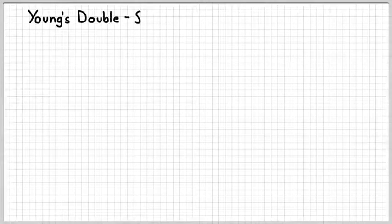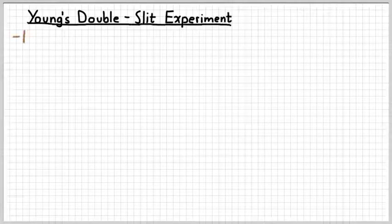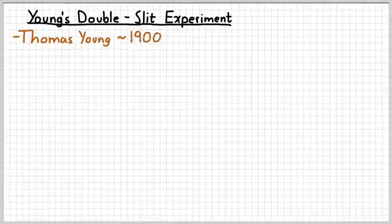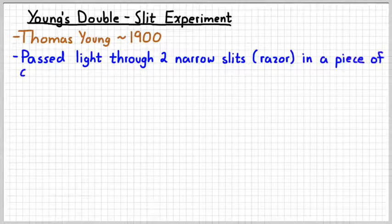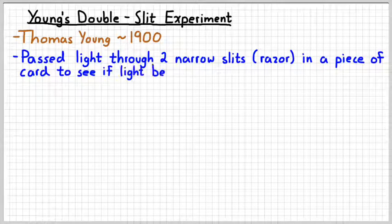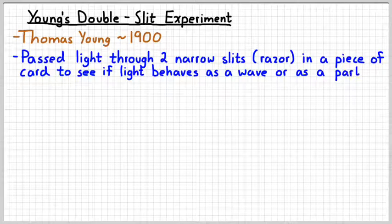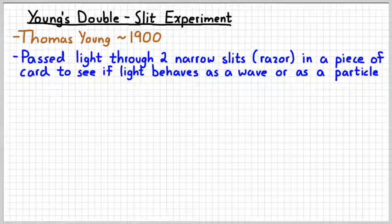So why is this diffraction thing important? This character by the name of Thomas Young, around the year 1800, performed an experiment. The purpose was to see if light behaved as a wave. He took a card, like an index card, used a razor blade to cut two very narrow slits in it, and then shined light on there. He was trying to see if light behaves as a wave or as a particle. We refer to this as Young's double slit experiment, because he cut two slits in the card.